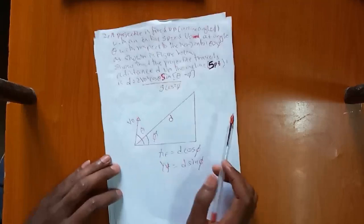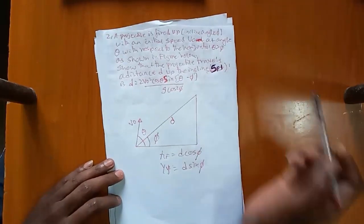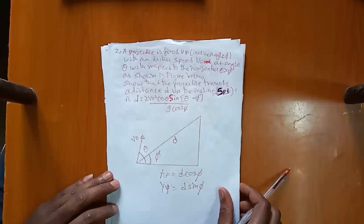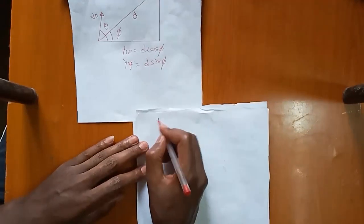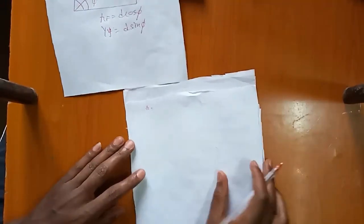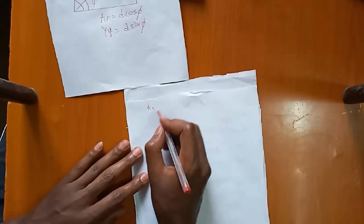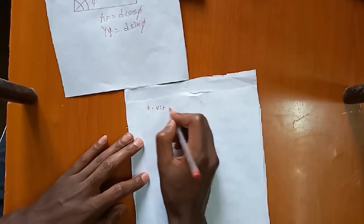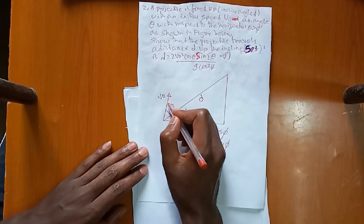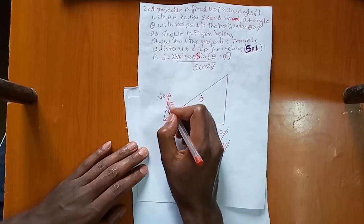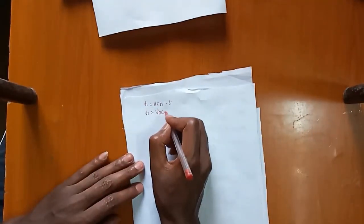We are going to work with horizontal distance. The horizontal distance is the same as x distance. x is equal to v-naught — the initial velocity in the x-direction — times time. The x-direction component is v-naught cosθ.